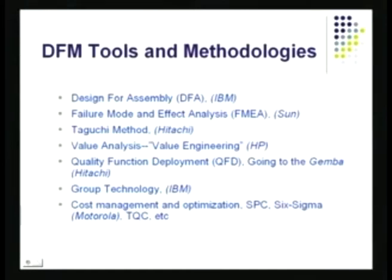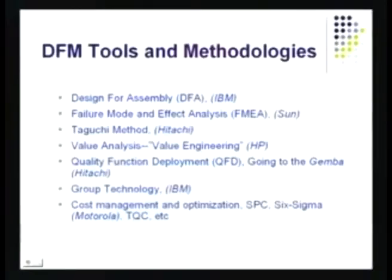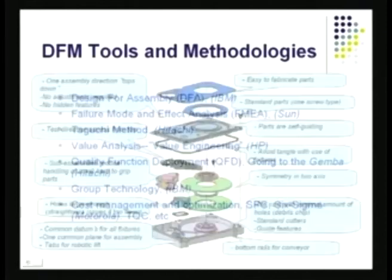If there are similar parts to be made, you take advantage of group technology. If there are lots of turning operations of different dimensions, those turnings are grouped together and done at one workstation. Otherwise, dissimilar processes at the workstation lead to lots of switchovers, setup cost, and inefficiency. IBM exploited this very well in computer manufacturing. You also have standard quality assurance and cost management methods — SPC, Six Sigma, TQM, and TQC — which all help out with DFM.